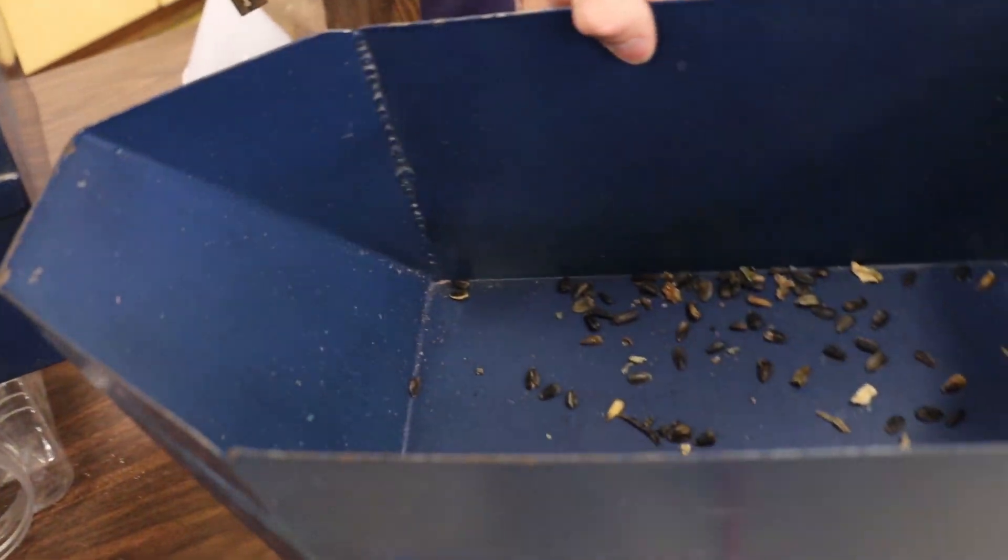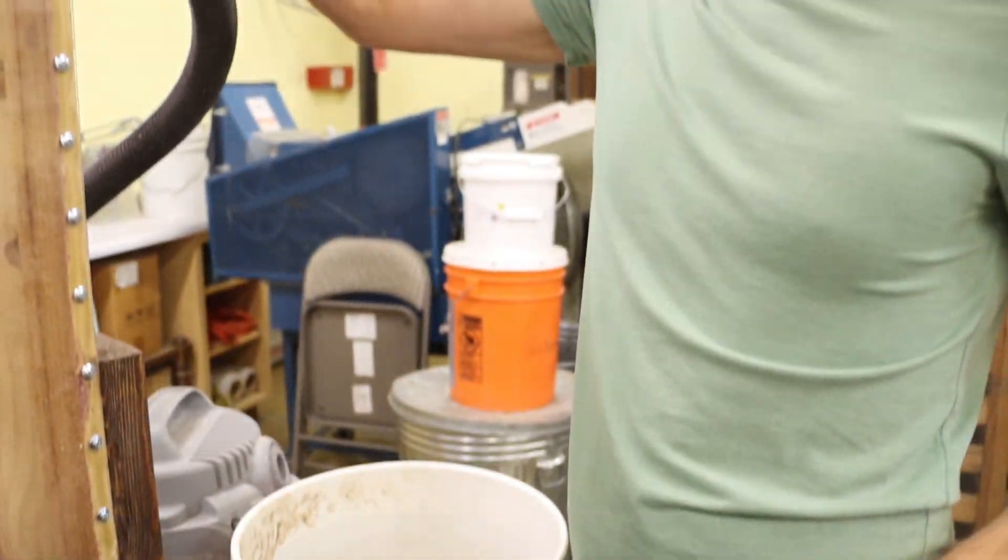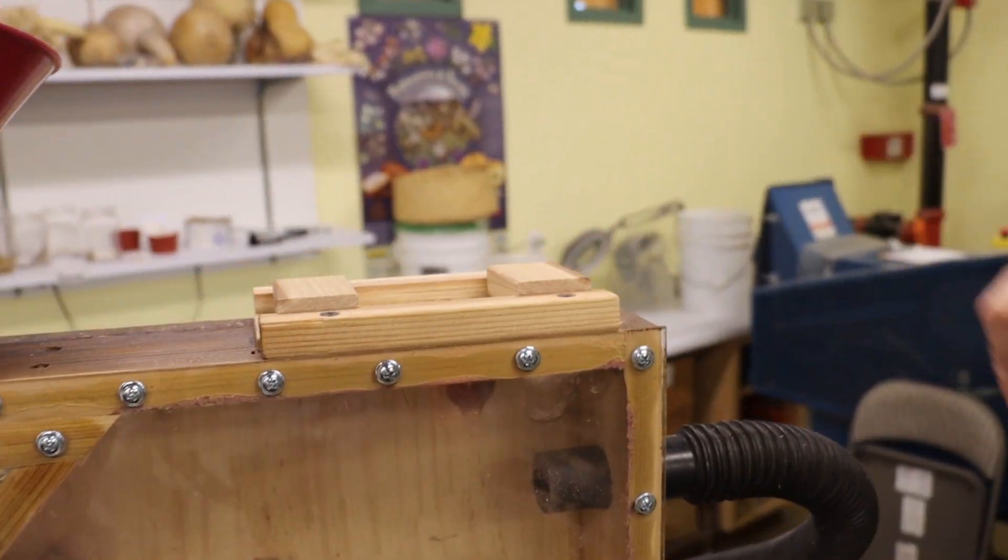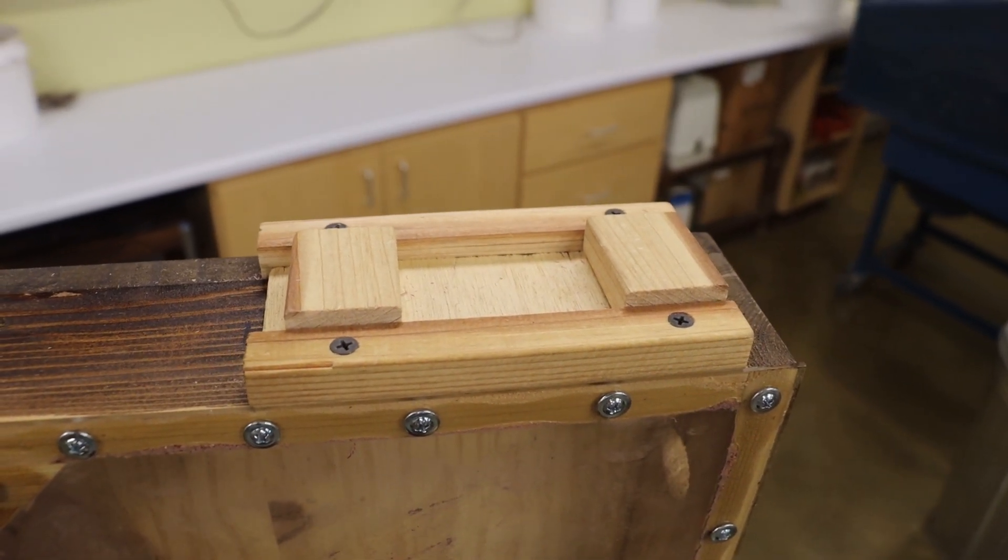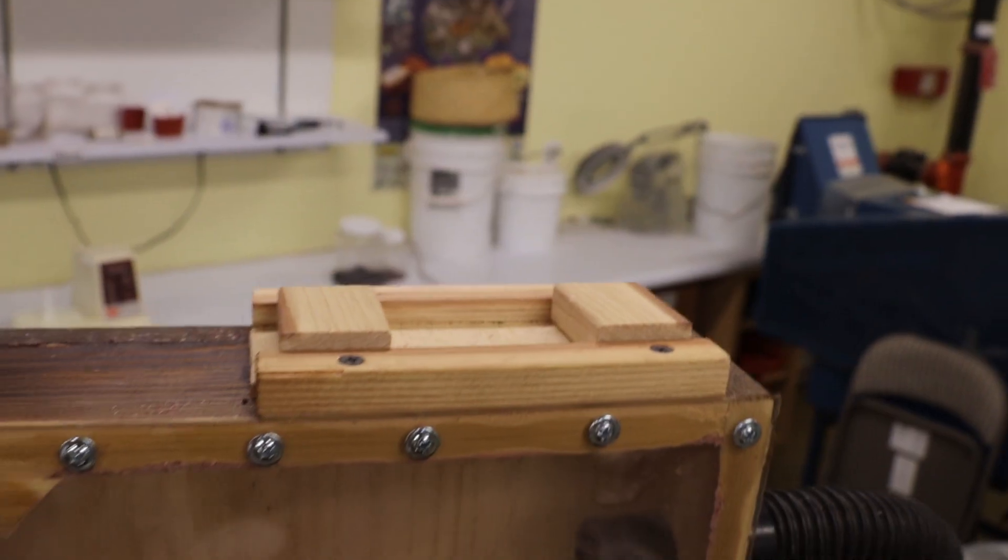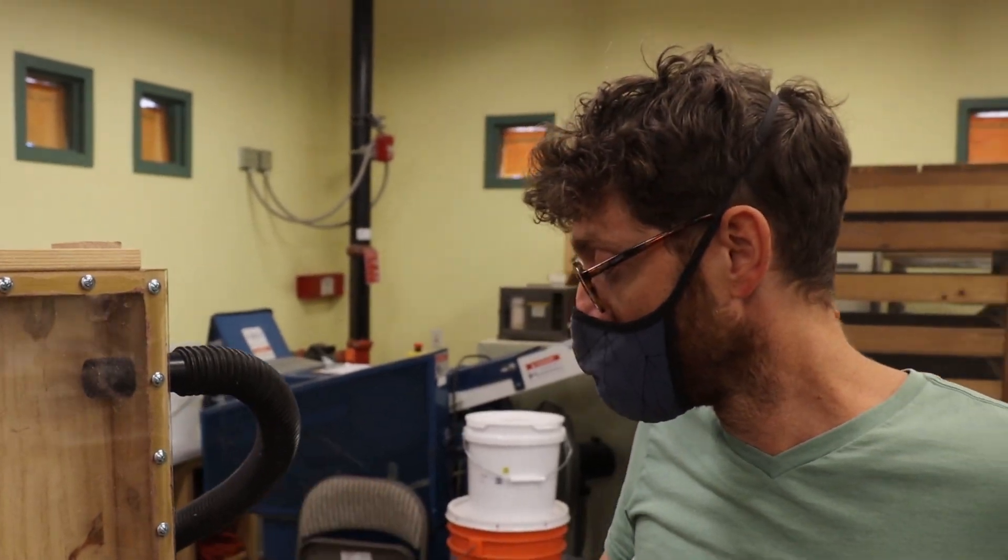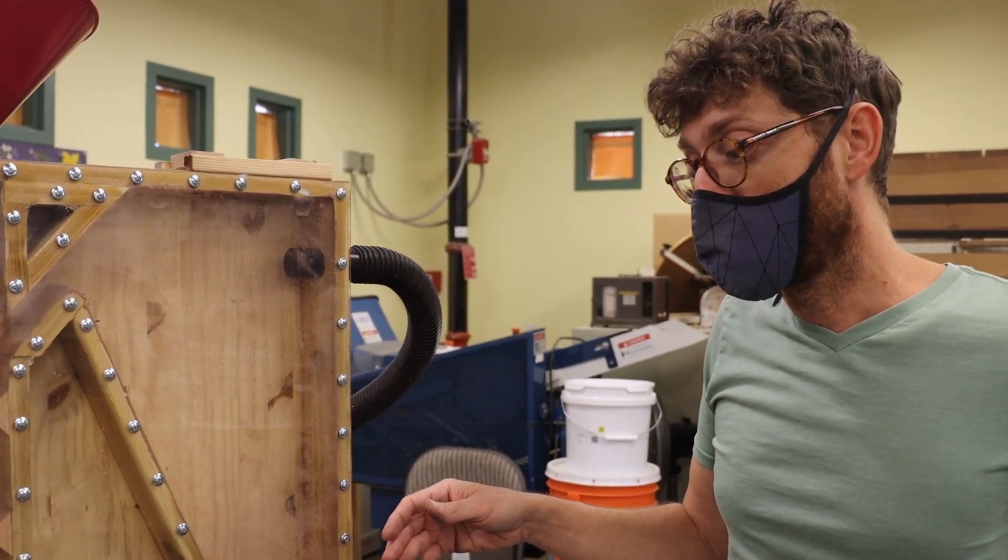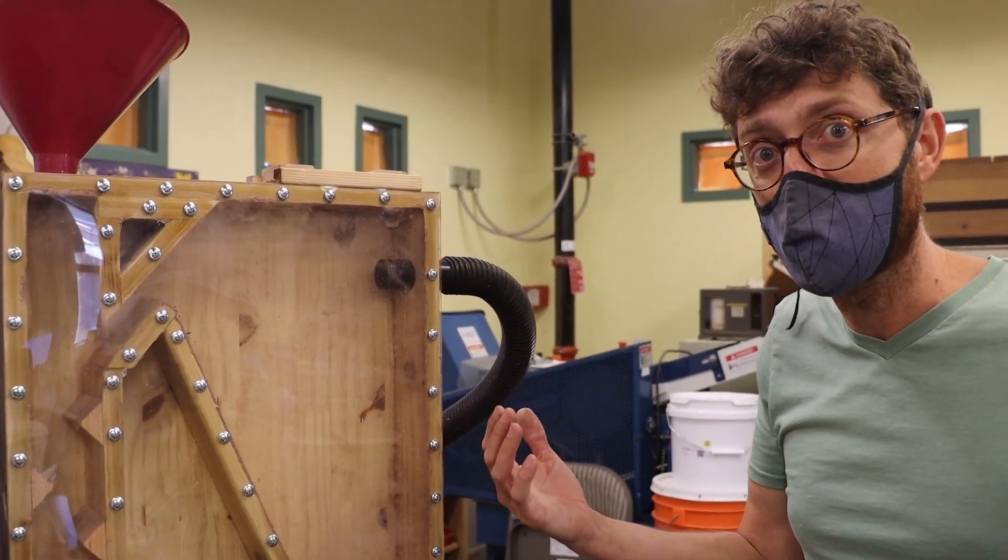So this is the stuff that came out of the chaff side. I should also mention that we closed this entirely, the thing that allows some of the extra air to escape. We closed it entirely, which means that the pulling strength of the shop vac is at its maximum, which means that we're pulling as much as we possibly can to this side.